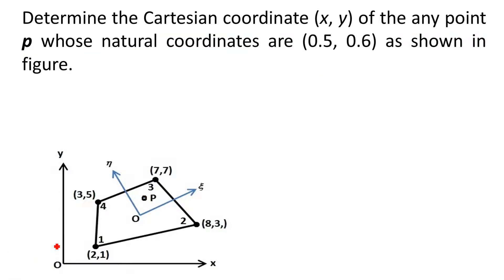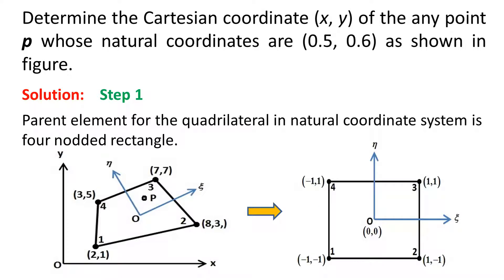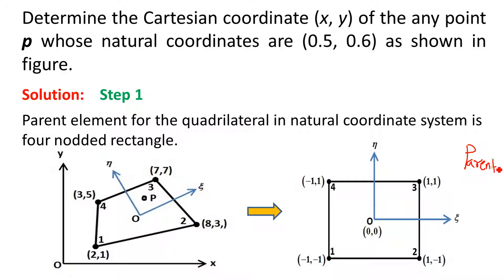In the solution, the first step is to draw the parent element for the quadrilateral element. We know that the parent element of a quadrilateral is a 4-noded rectangular element in the natural coordinate system. The sequence of node numbering is 1, 2, 3, and 4 in anticlockwise sense. The same sequence is used for the node numbering in the parent element.